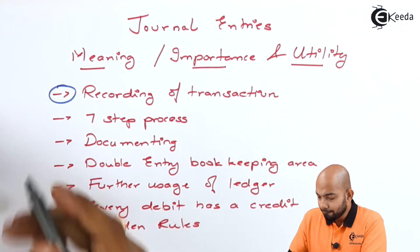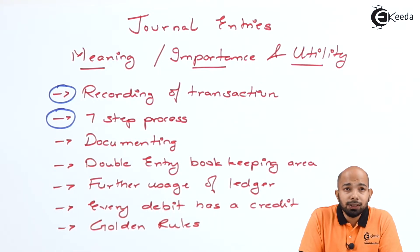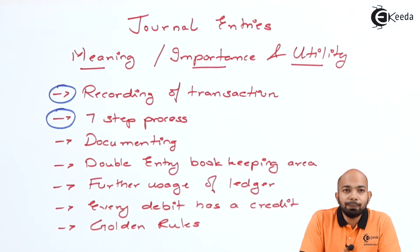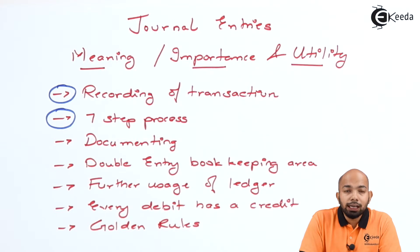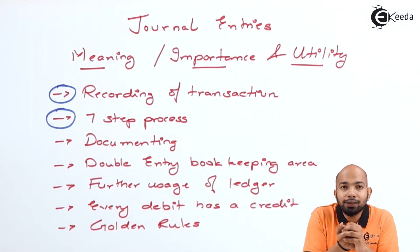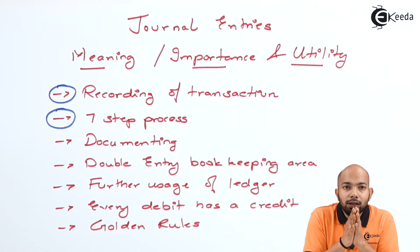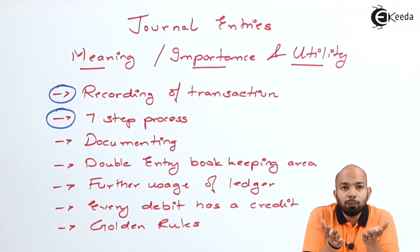The seven-step process forms the core of accountancy. Any accountancy cannot function without this seven-step process being followed. Unless and until you follow this process, you will have a clear idea of what transactions are, how they are measured, regularized, recorded, classified, summarized, and provided for analysis and interpretation. If either of these steps is missed, the end users won't have information in hand. That's the reason journal entry recording is one of the most important steps after evaluating financial transactions under monetary measurement.